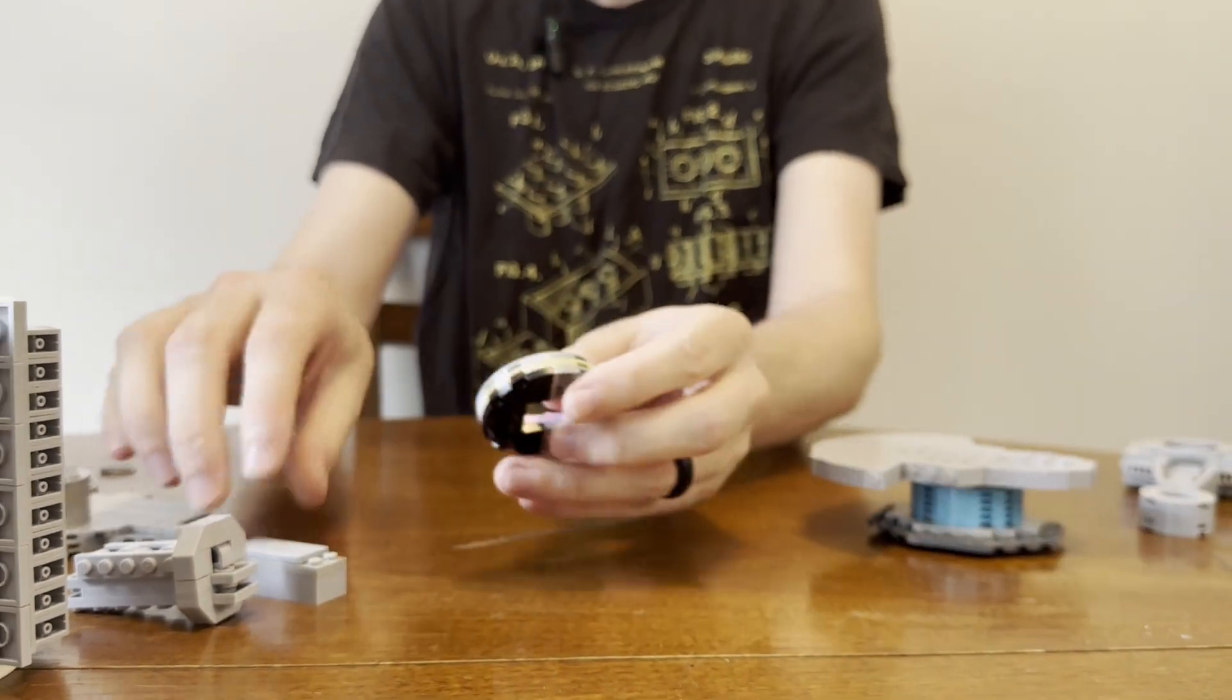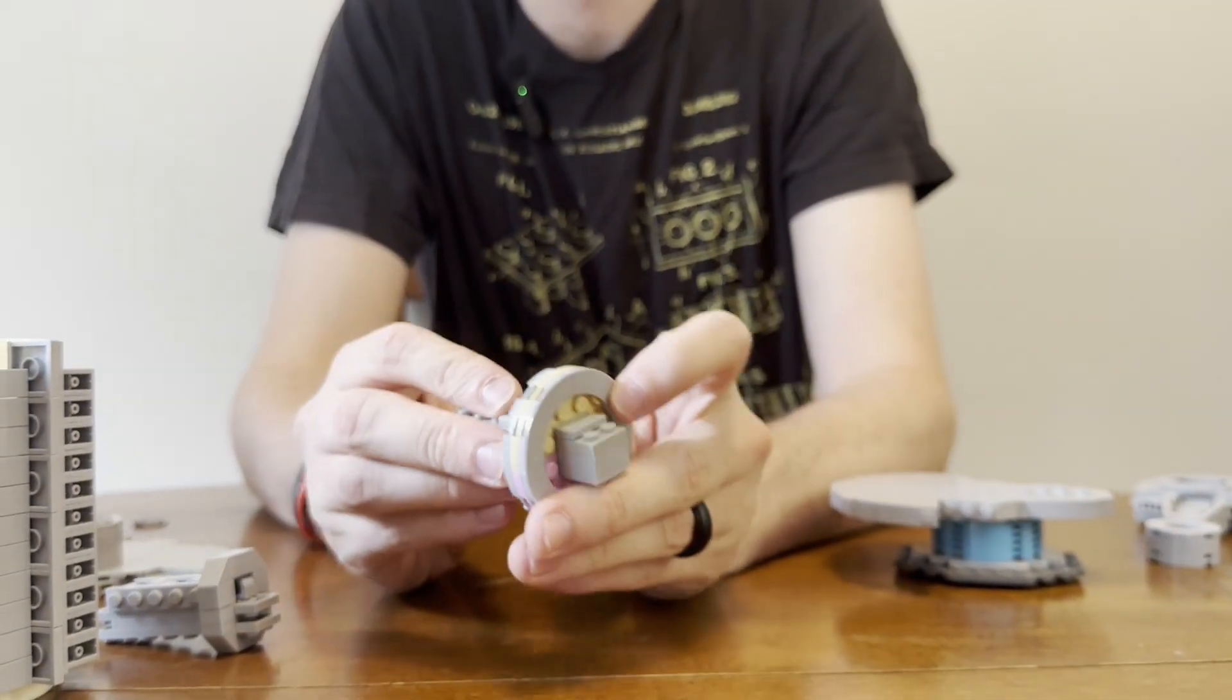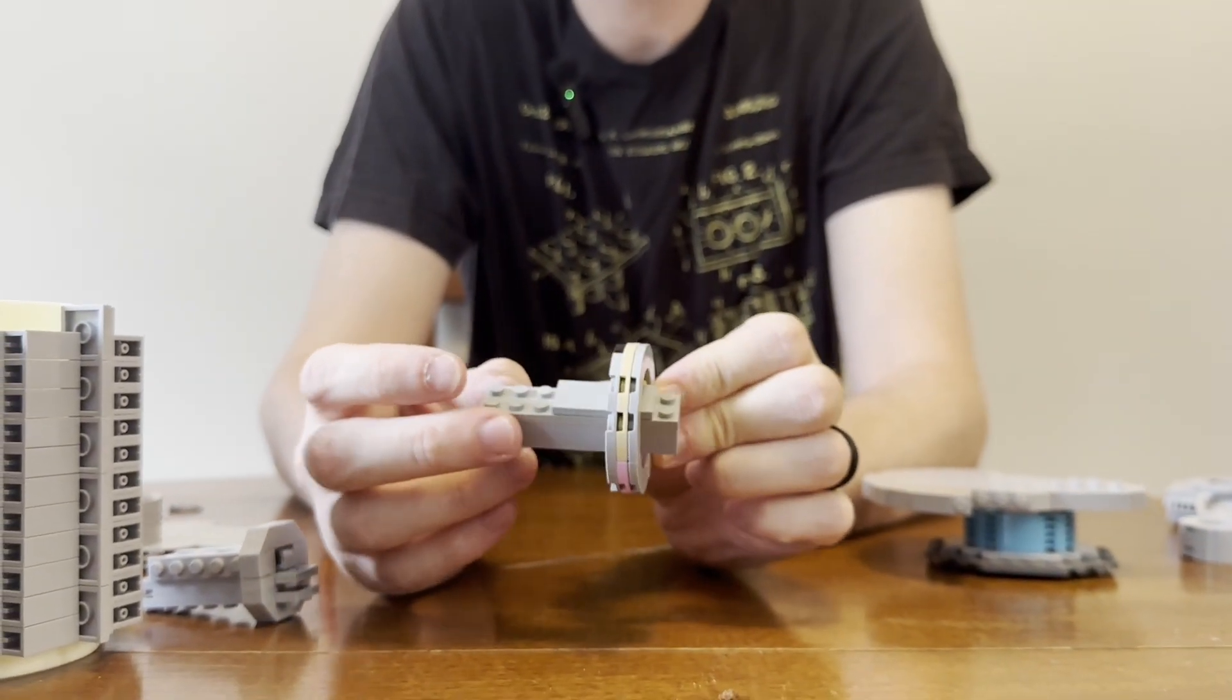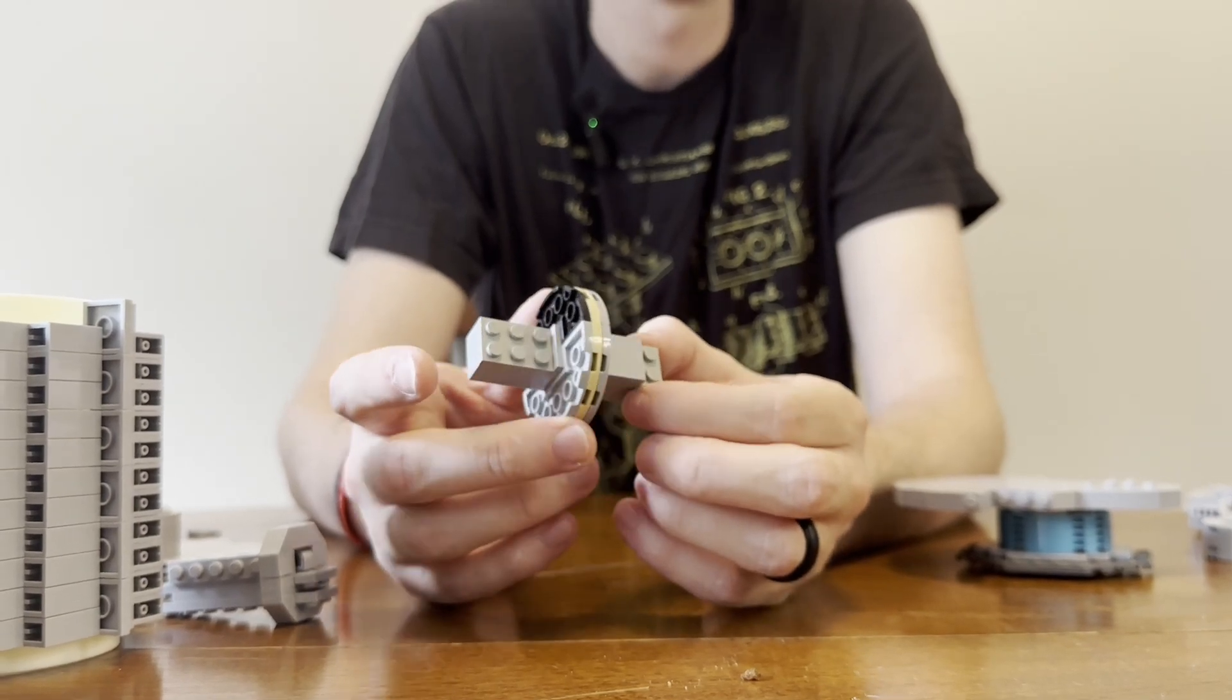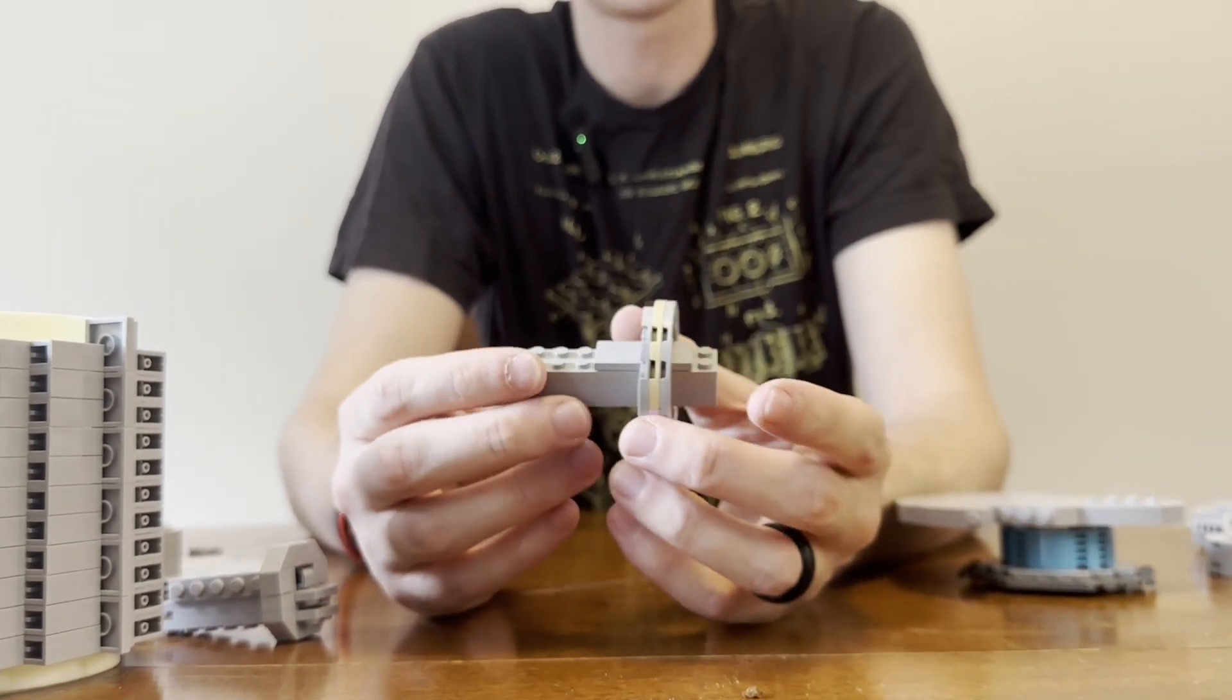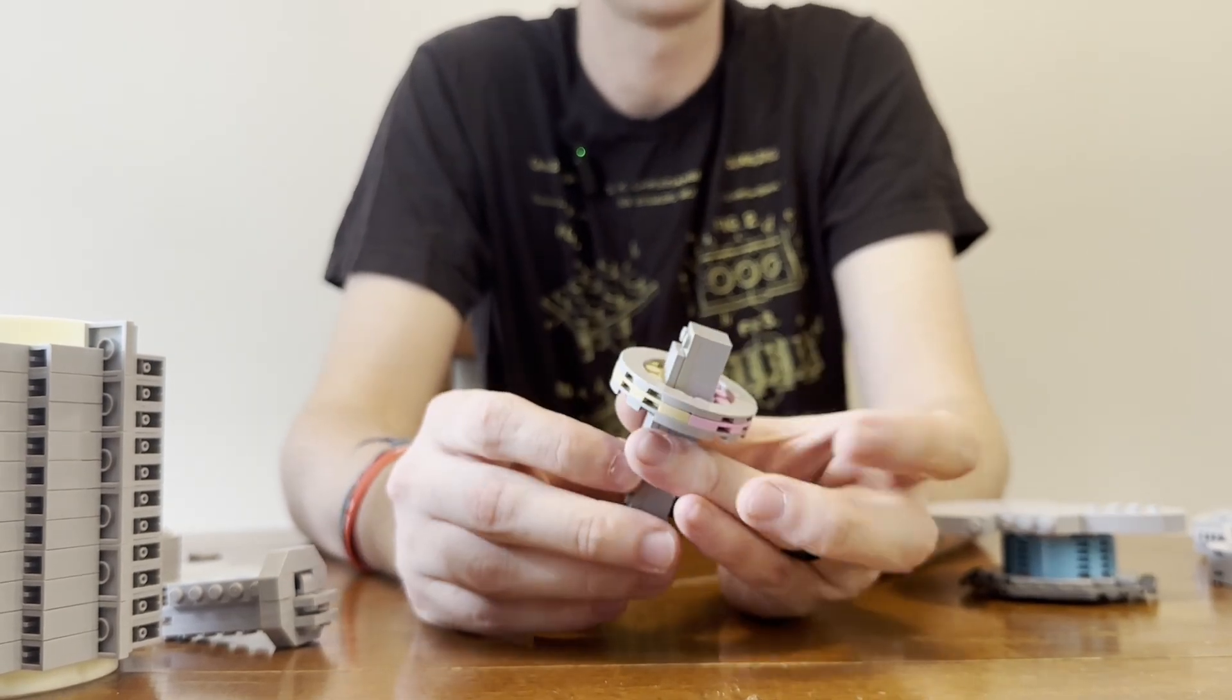But the funniest part about this whole thing, and this makes me laugh, is that the strength of it is actually just in the brick. And the outside of the main shaft is just sliding on that brick. It's just floating there. It doesn't need to be attached.